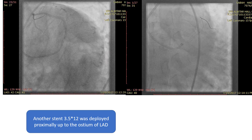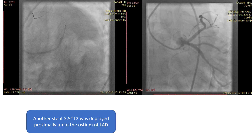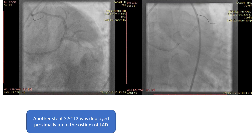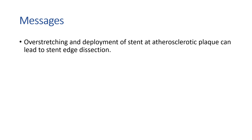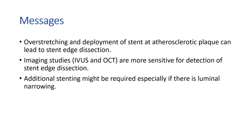We went on for additional stenting using a 3.5 by 12 stent, deployed proximally up to the ostium, and this is the final result. The key messages from this case: overstretching and deployment of a stent at an atherosclerotic plaque can lead to stent edge dissection. Imaging studies like IVUS and OCT are more sensitive for detection of stent edge dissection. Additional stenting might be required, especially if there is luminal narrowing. Thank you.